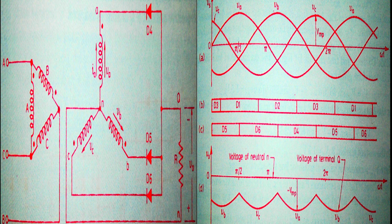Now we have the common anode arrangement, where three anodes are connected together. The diodes are flipped and named D4, D5, and D6. The cathodes of these diodes are connected to the three phases A, B, and C. A diode will be in forward bias when its cathode is connected to a more negative voltage compared to its anode, which is connected to the neutral at zero volts.